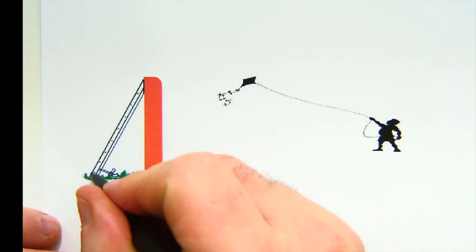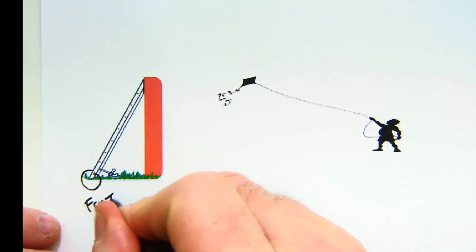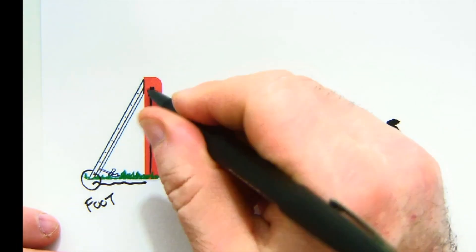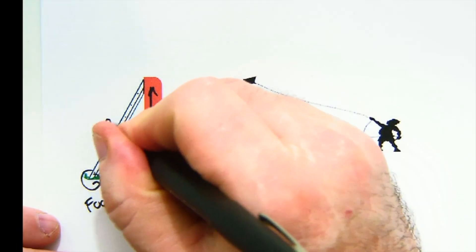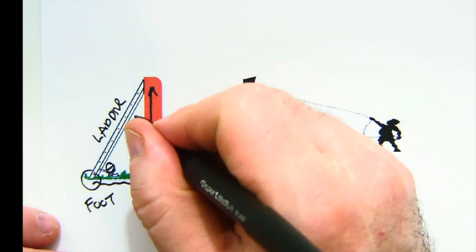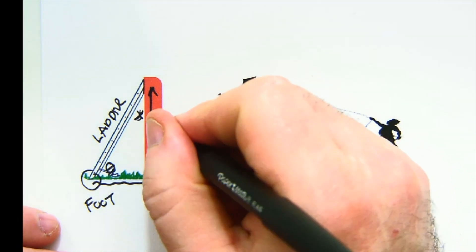Ladder problems. There's all kinds of them. This is called the foot of the ladder. This would be the distance from the foot to the wall. This would be, of course, the wall. This is, of course, your ladder. The item leaning is the ladder. This would be the angle formed between the ladder and the ground. This would be the angle formed between the ladder and the wall.